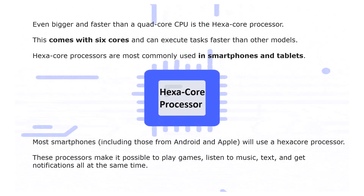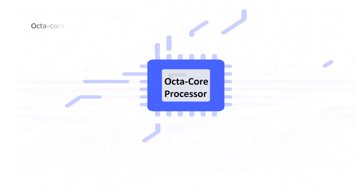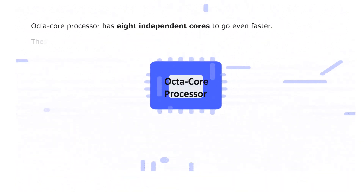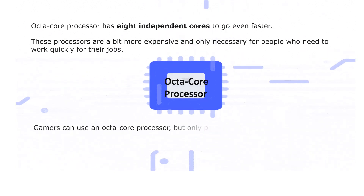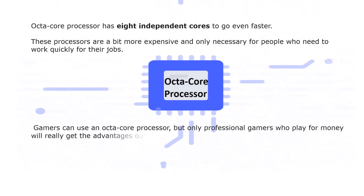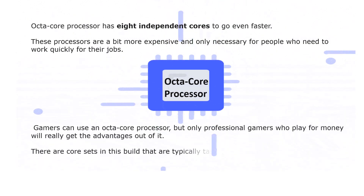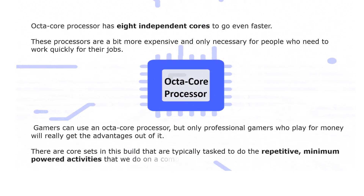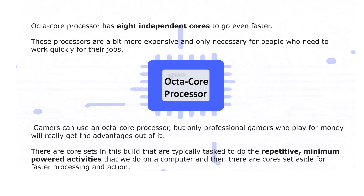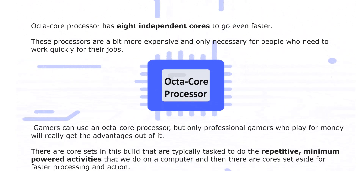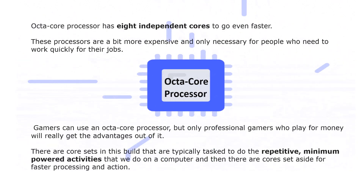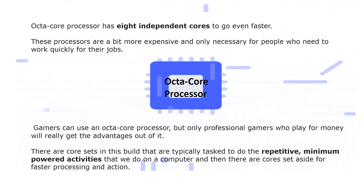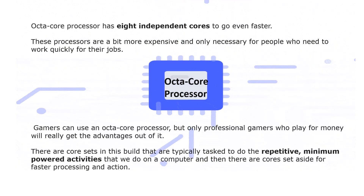Next is the octa core processor, which has eight independent cores to go even faster. These processors are a bit more expensive and only necessary for people who need to work quickly for their jobs. Gamers can use octa core processors, but only professional gamers who play for money will really take advantage of it. Some cores are set aside for repetitive, minimum-powered activities, while others are dedicated to faster processing.